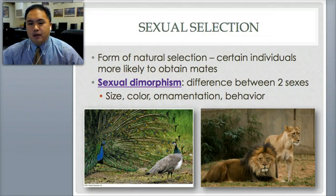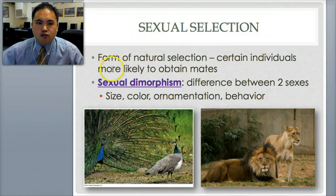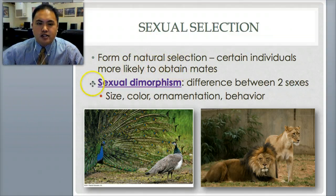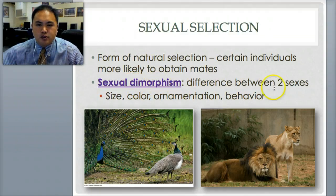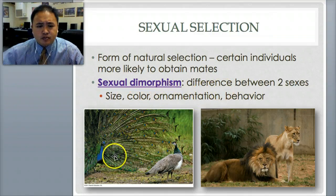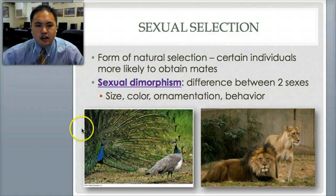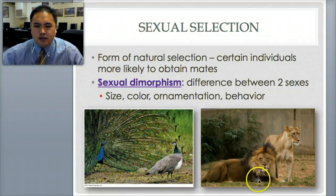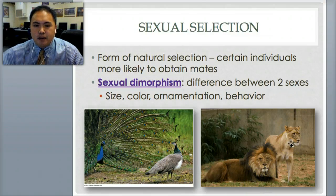How does this sort of happen? We have something called sexual selection — it's a form of natural selection where certain individuals are more likely to obtain mates. An important vocab word is sexual dimorphism. 'Di' meaning two — it's the difference between two sexes in size, color, ornamentation, and behavior. For example, in peacocks, males have a beautiful display whereas females do not. Same thing for lions — males have a very unique appearance compared to females. That's what we mean by sexual dimorphism.